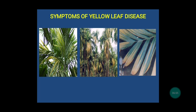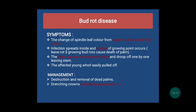This slide shows the symptoms of yellow leaf disease. The first and third pictures show the yellowing of leaf tips, and the second one shows the infected trees. The last disease is bud rot disease. The causal organism is Phytophthora arachidis. The major symptoms are a change of spindle leaves from green to yellow and then to brown color.